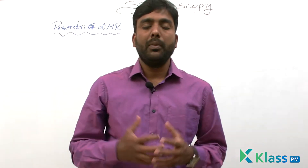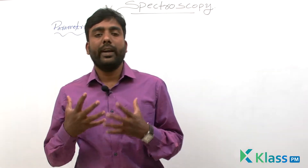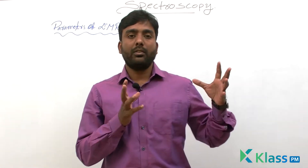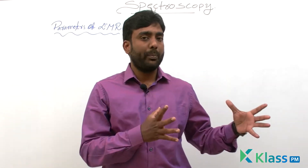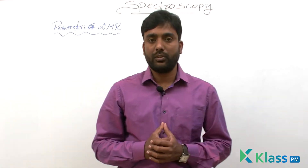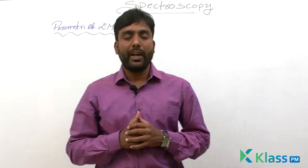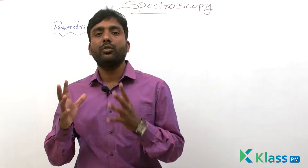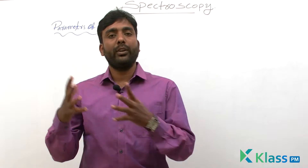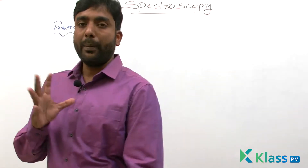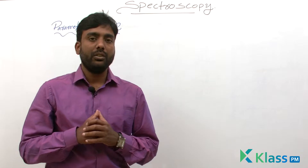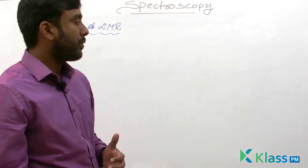Hello students, welcome to class. We are discussing spectroscopy. In the last two classes we tried to understand the significance of spectroscopy and what electromagnetic radiations are and their characteristics. In today's class we are going to learn the parameters used to describe electromagnetic radiations. There are five parameters which describe electromagnetic radiation.